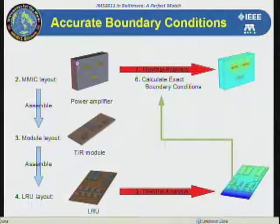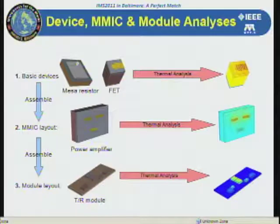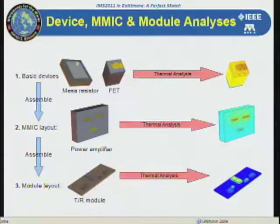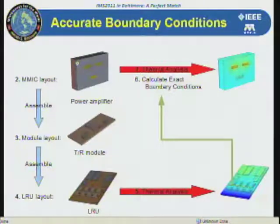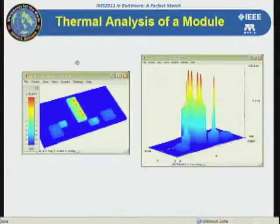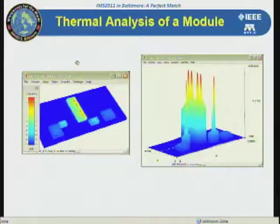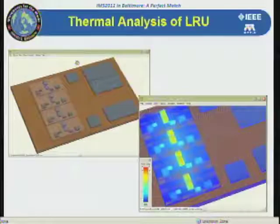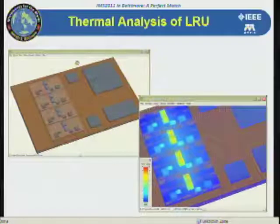The process is fairly straightforward: you start with the basic device design, move to the circuit level, do the actual MMIC layout, and if it's going into a TR module, space out your ICs in the module. At the module level you can run the thermal analysis for the whole structure — we're showing a multi-stage simulation where you can look at thermal profiles in 3D to easily see where peak temperatures are occurring. Here at the LRU level, we've taken four of those modules and put them all in parallel. It is a completely hierarchical approach to doing thermal analysis.